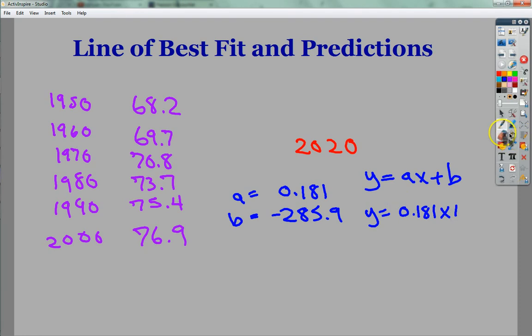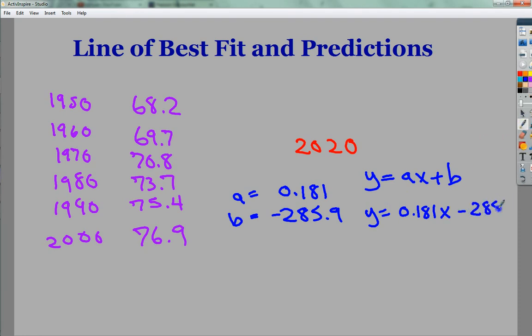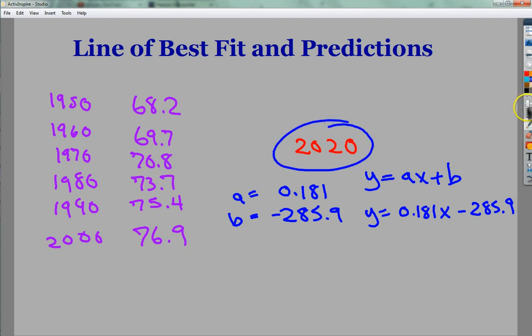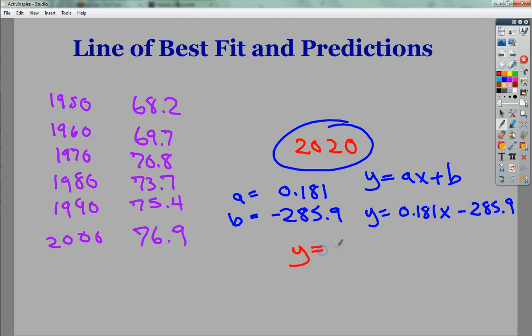And then, I don't know why I was trying to put plus there. I meant to put minus. So minus 285.9. All I have to do from here is take the year, which is my X value or my input, and just plug it in. So I'm going to do Y equals 0.181, like parentheses would be there.